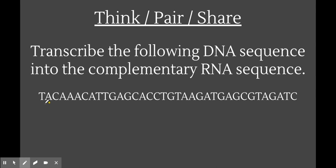If we were an RNA polymerase reading this strand from left to right, if we saw thymine in the DNA, we would put an adenine across from it, because A always pairs with T. If we saw an adenine, we would put a U across from it — not a T, because this is RNA, not DNA. If we saw a C, we'd put a G across from it. If we saw an A, we'd put a U, and so on.